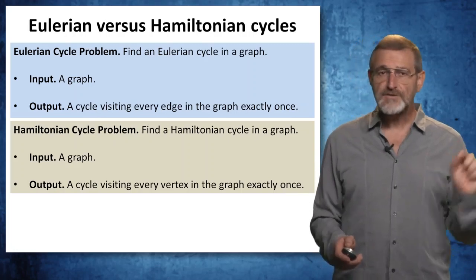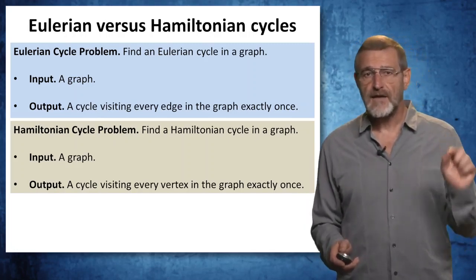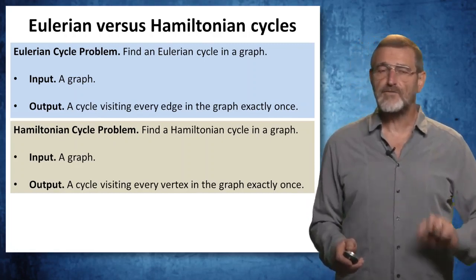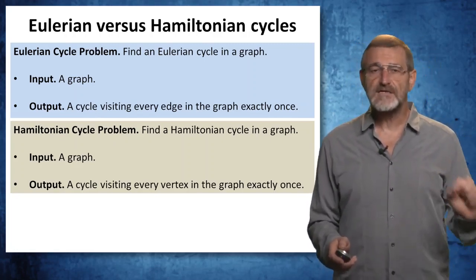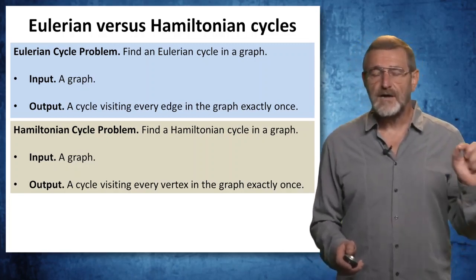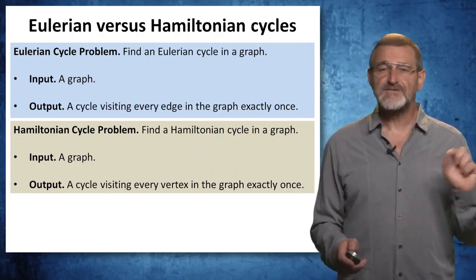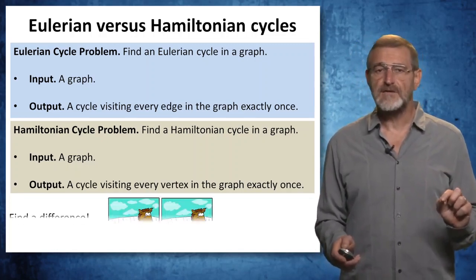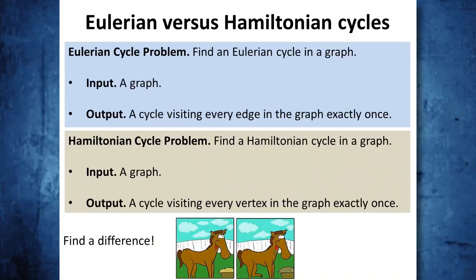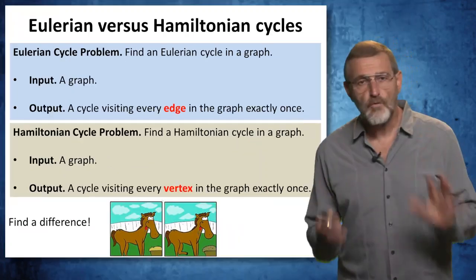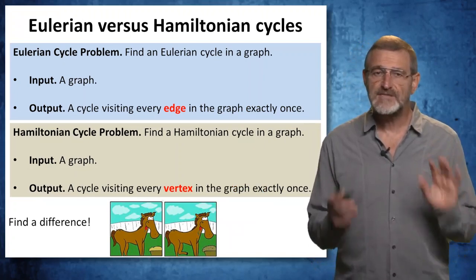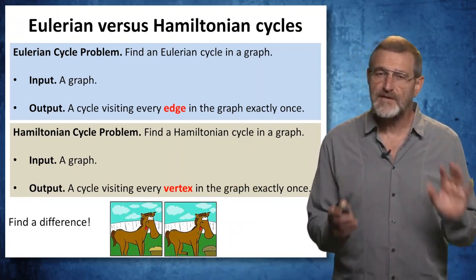This problem was solved 300 years ago by a great mathematician, Leonard Euler. Looking at both the Eulerian cycle problem and the Hamiltonian cycle problem — we prefer cycles because bacterial genomes are usually circular — the only difference is that the Eulerian cycle problem talks about visiting every edge, while the Hamiltonian cycle problem talks about visiting every vertex. So why did we introduce the Eulerian cycle problem instead of the Hamiltonian cycle problem if they are so similar? It will become clear in a second.